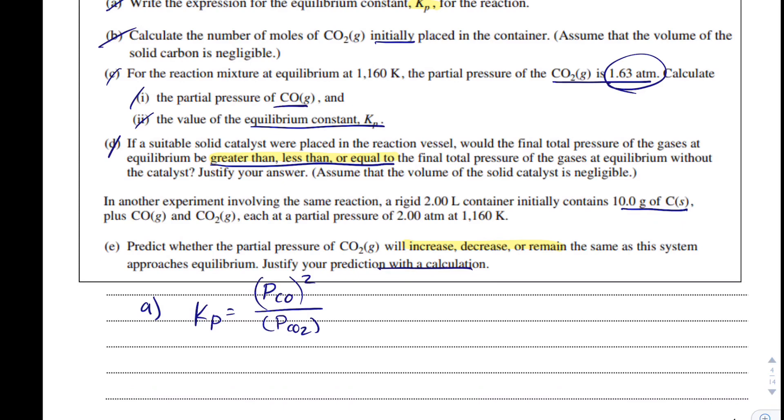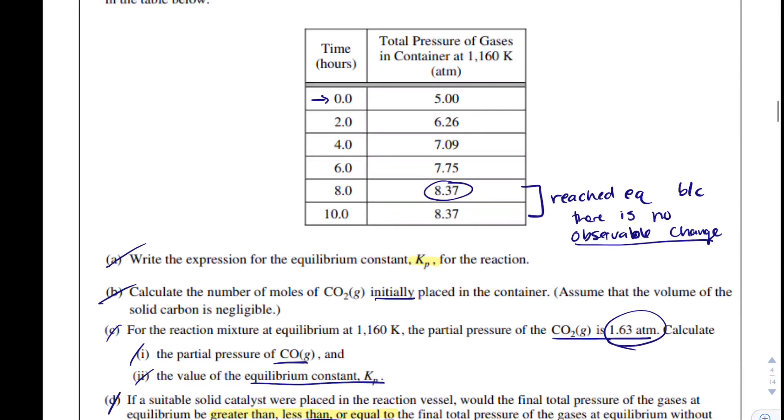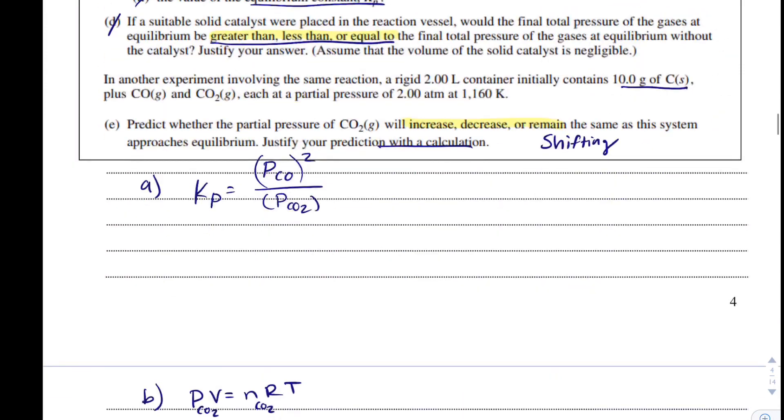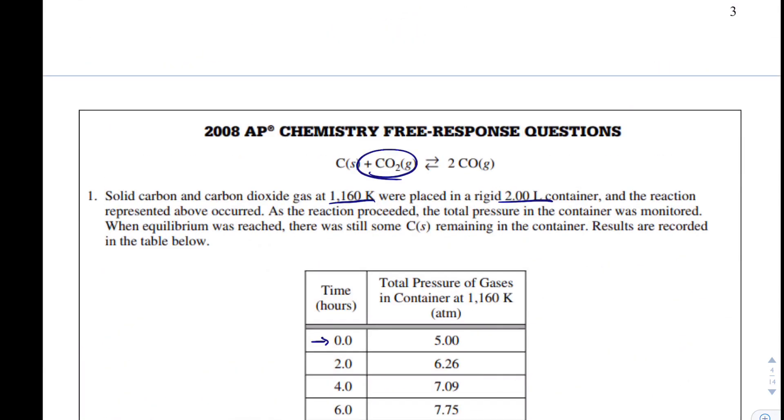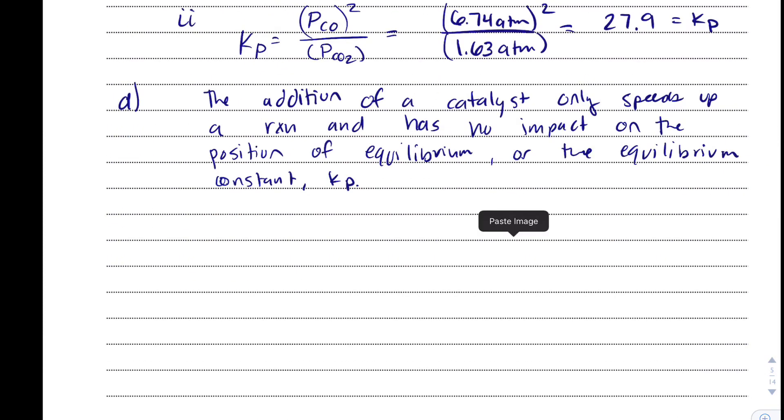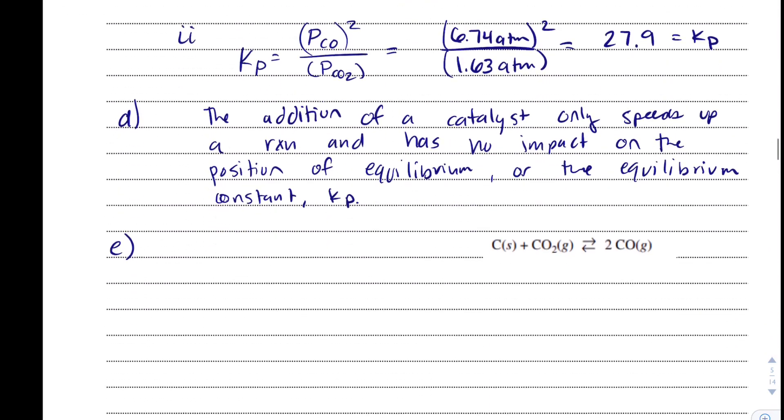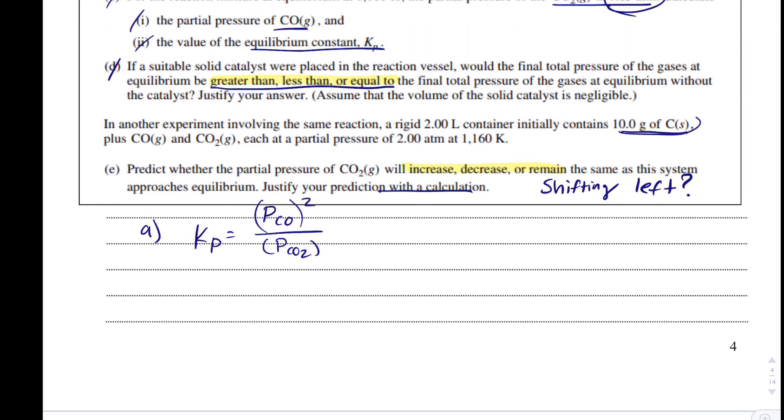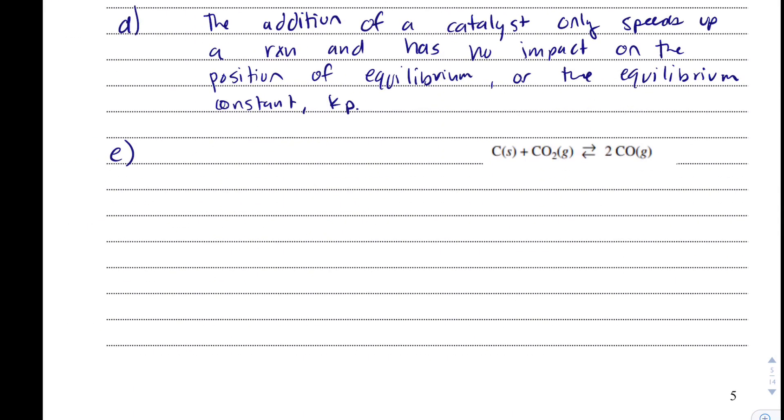So to me, although they worded it kind of strange, this is a shifting question. They're basically saying, are we going to shift towards CO2? Are we going to shift left? So, what we'll do is I'm going to take a picture of this, move it down here so we can use it. They say that we have 10 grams of carbon and then 2 atmospheres of CO and CO2. So, if we're talking about shifting, we need to do Q versus K. Anytime you're doing Le Chatelier's principle, the best justification you can have is talking about Q versus K.